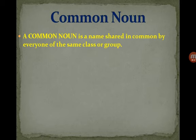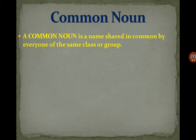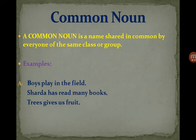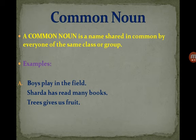Next is common noun. A proper noun is a particular name of a person or place. A common noun is a name shared in common — it is commonly shared and used, and includes many persons or things under one word. For example: Boys play in the field. I am a boy and the viewer is a boy; we are different people with different names, but we use the common name 'boy'.